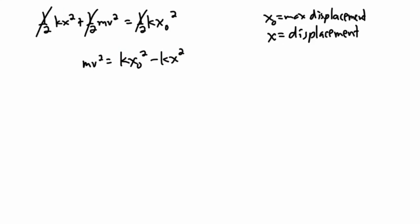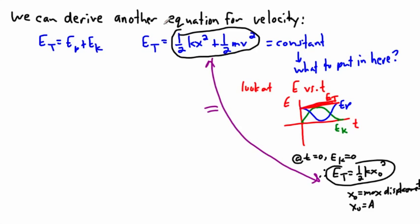What I can do now is actually combine like terms. I've got a k in both of them. So I'll say k times x zero squared minus x squared, just to sort of pretty it up a little bit. But I want to get v by itself because I'm trying to get an equation for velocity. My whole goal here is to find an equation for the velocity.